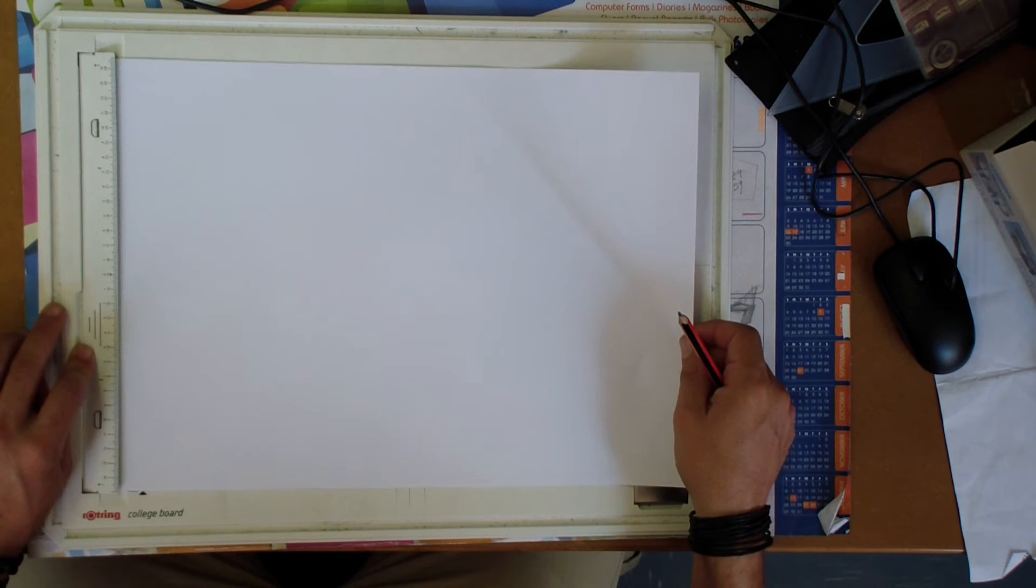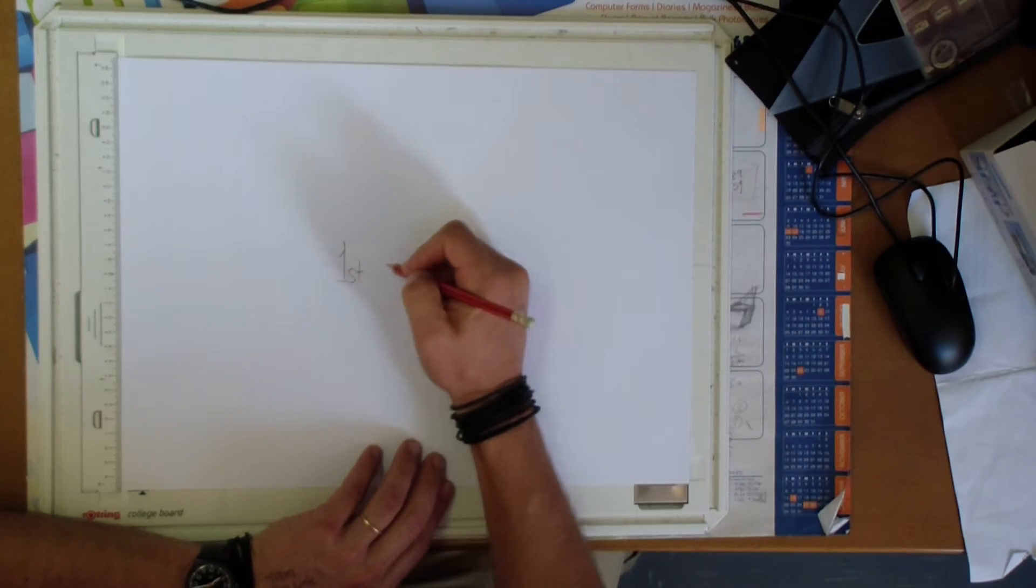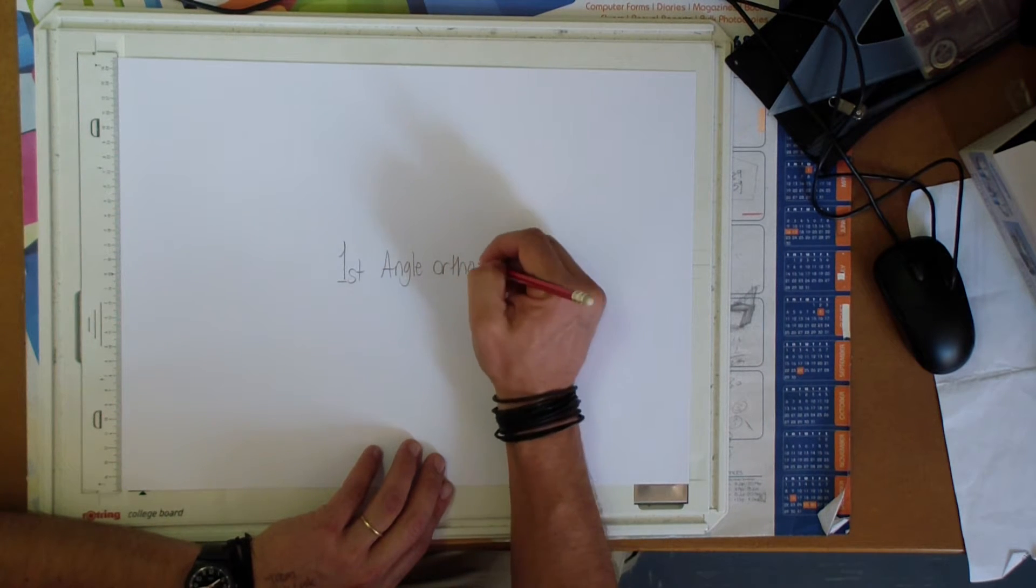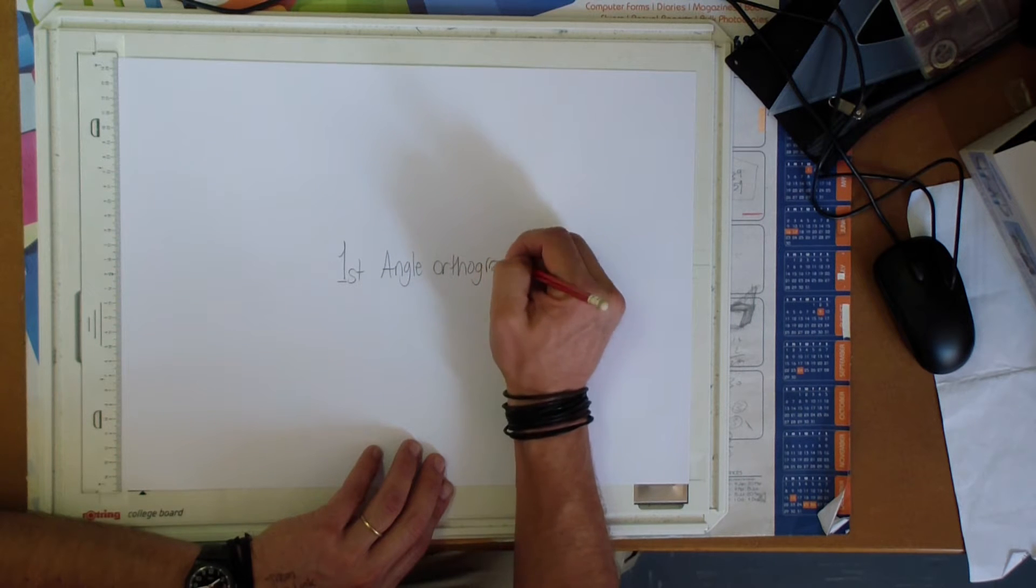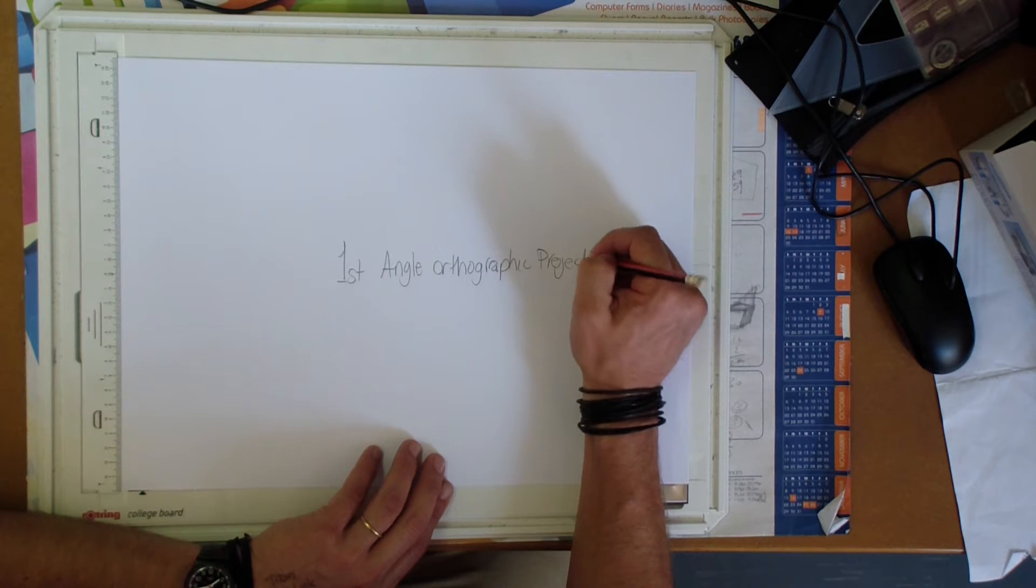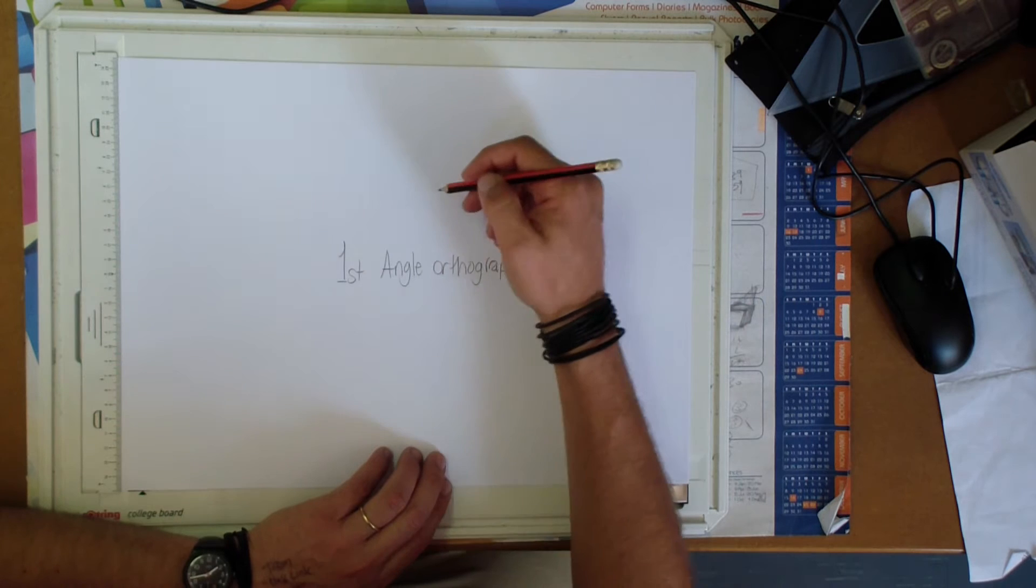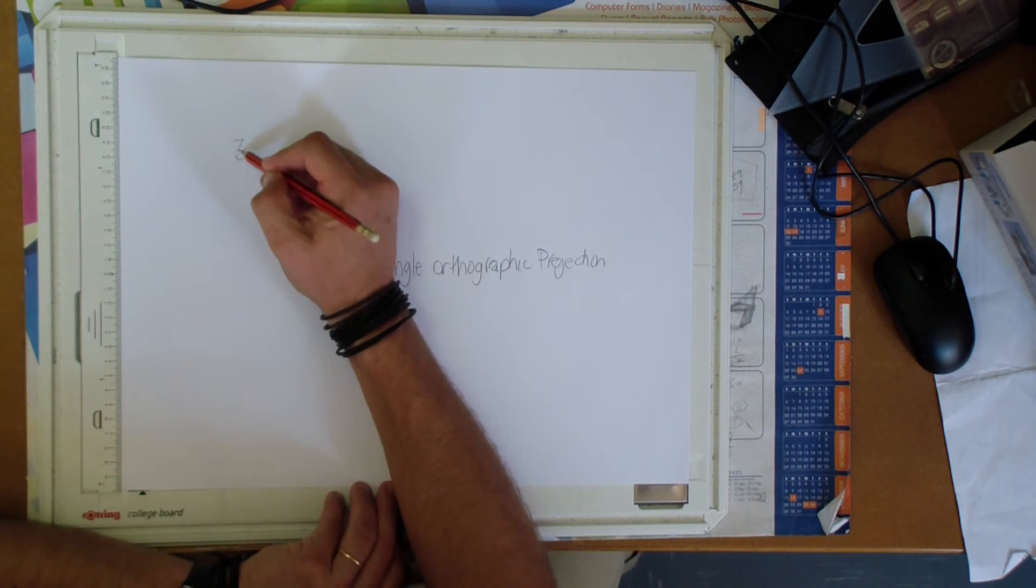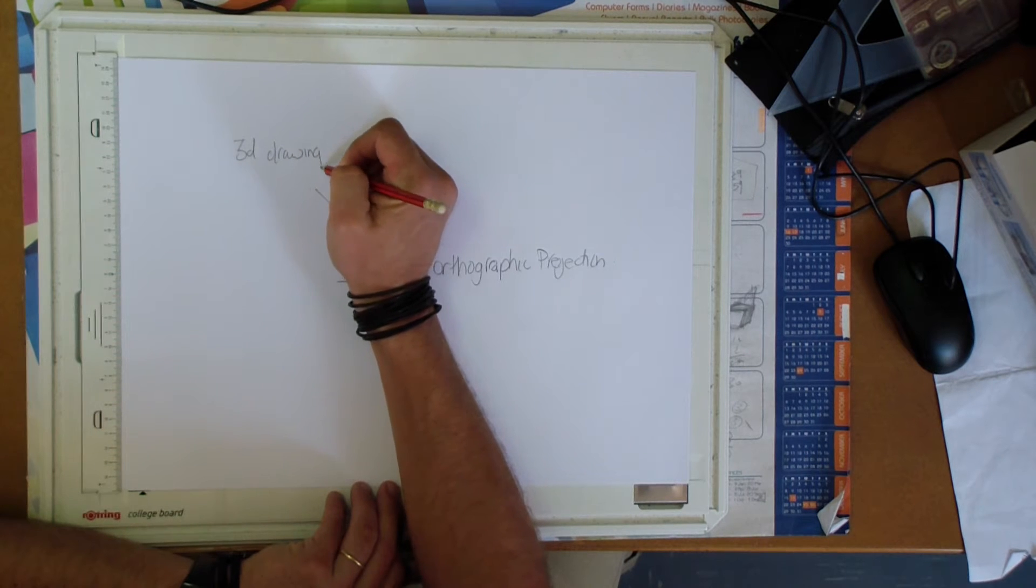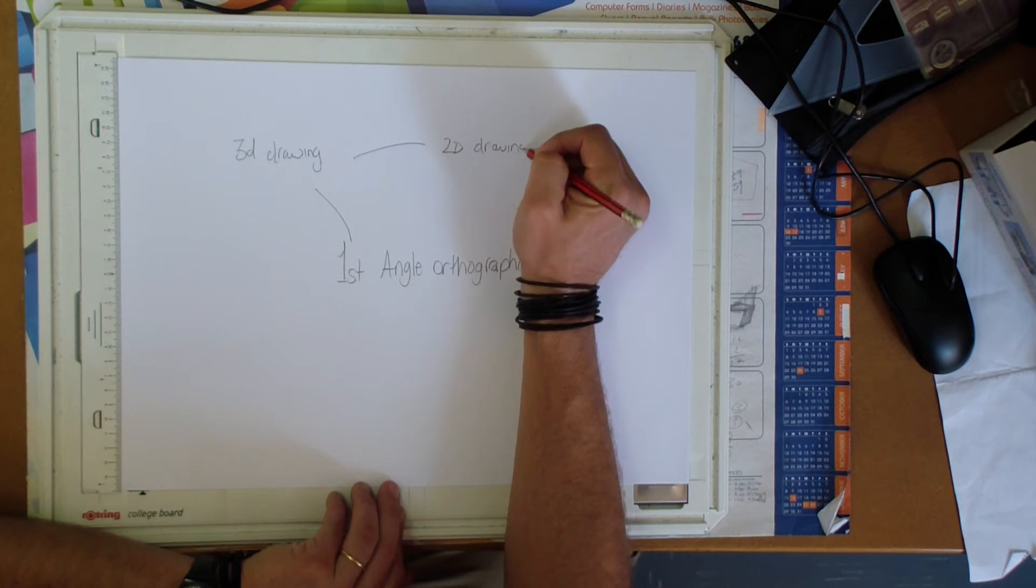So, first angle orthographic projection. Firstly, what is it? Well, first angle orthographic projection, we usually take a 3D drawing and we change it into a 2D drawing.